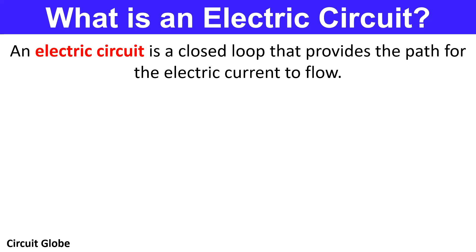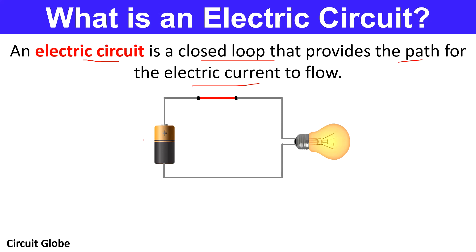Before proceeding towards the differences between series and parallel circuits, let us first have a basic idea about what an electric circuit is. An electric circuit is defined as the closed loop arrangement that provides a path for the electric current to flow. Here we have shown the simplest form of electric circuit containing a battery, a bulb, and a switch in closed configuration, thereby showing a closed loop electric circuit.